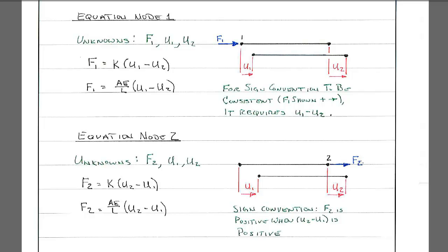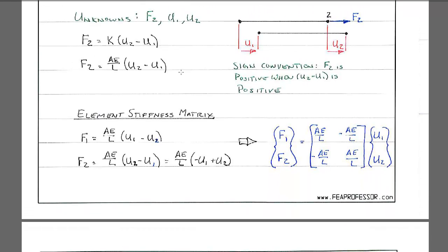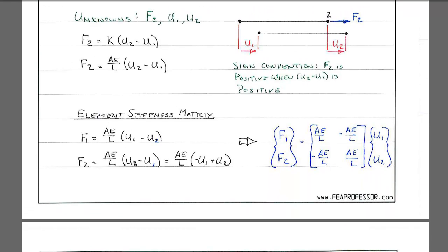So then we can do the same thing at node 2. Here the unknowns are f2, u2, and u1. So we have f2 equals k times u2 minus u1. And it needs to be u2 minus u1 for the directions and the displacements to be consistent. You can go through and plug some numbers in to verify that. So here's the equation for node 2: f2 is equal to AE over L times u2 minus u1.